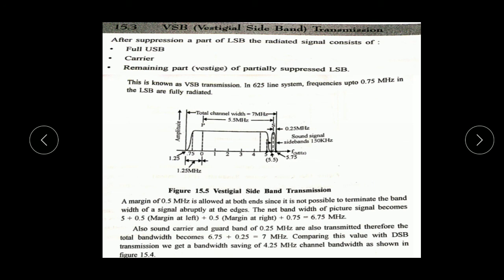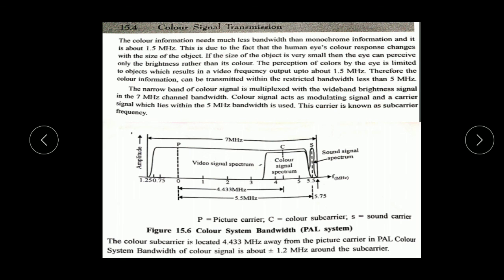Also with carrier and guard band of 0.25 MHz, and sound carrier, the bandwidth saving is 4.25 MHz. So comparing DSB to SSB/VSB cases, we save 4.25 MHz as you can see from the figure. So in this lecture we discussed amplitude modulation, SSB modulation, and VSB modulation. In the next lecture we will discuss color transmission.